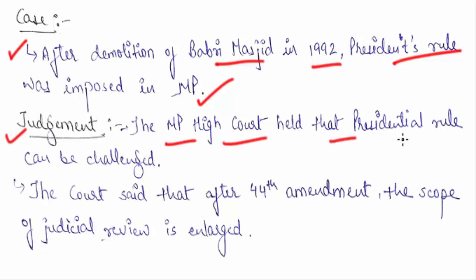The Madhya Pradesh High Court held that presidential rule can be challenged. You might say the 44th Amendment deleted the exclusion, but things are not so simple. Until the court gives its opinion on a case, who will do the final interpretation? It is the court — not the CM or PM — that will do the final interpretation. The 44th Amendment deleted the provision, but it did not say whether judicial review was available or not. So the court had to decide.